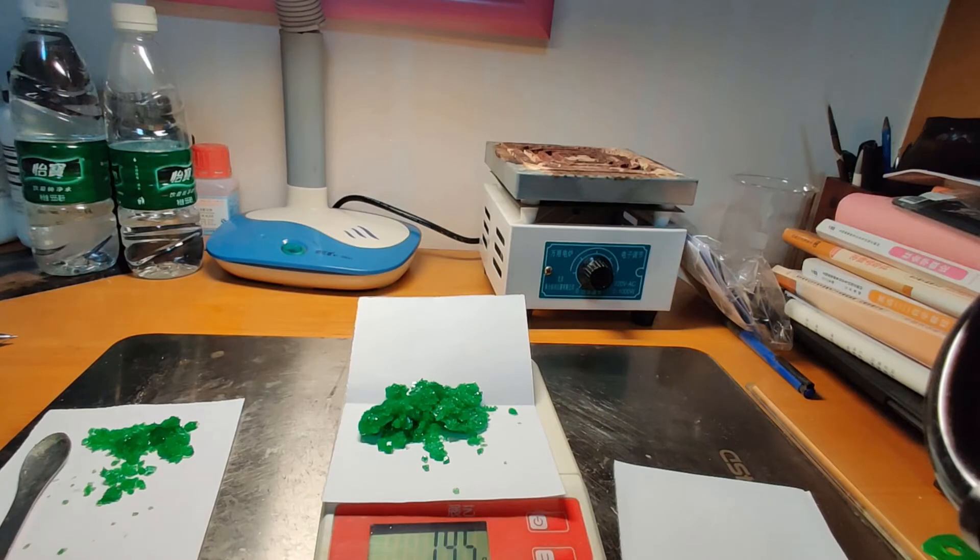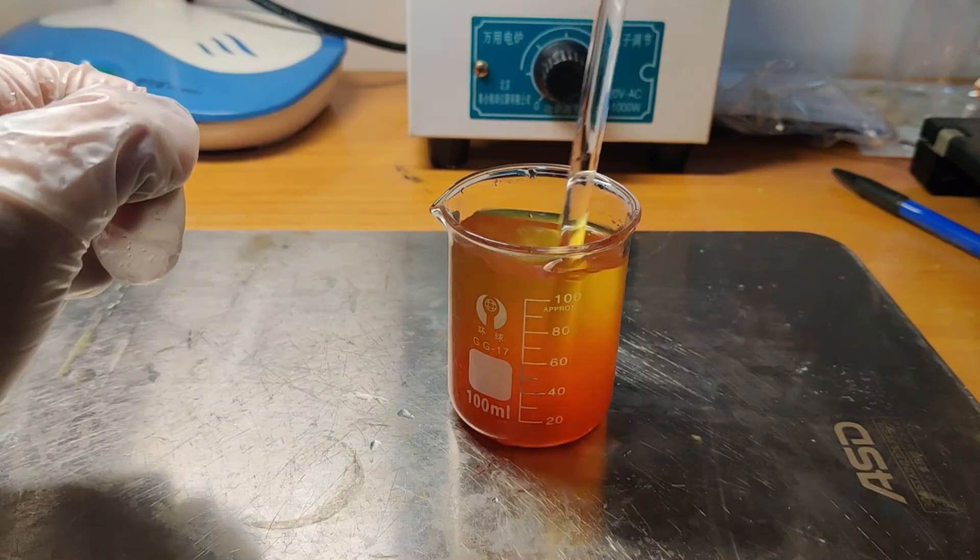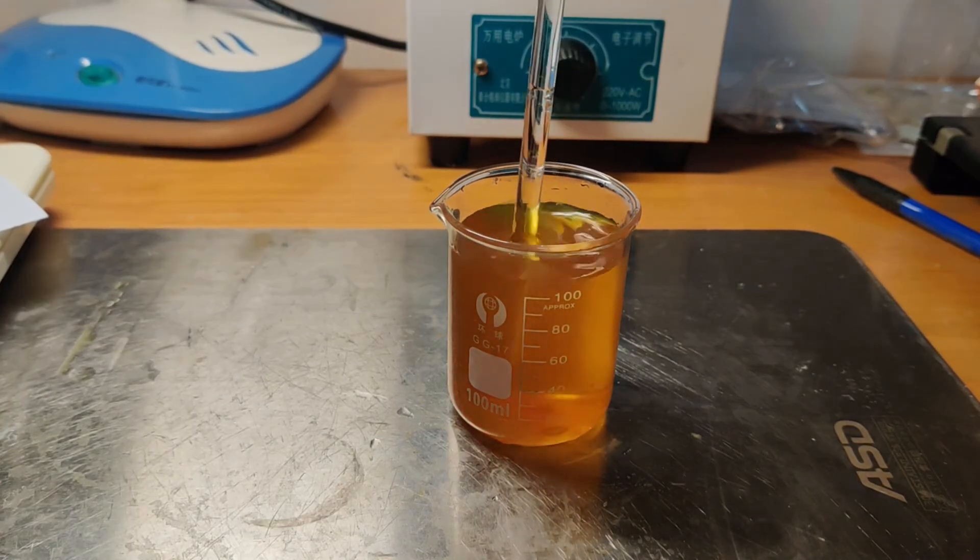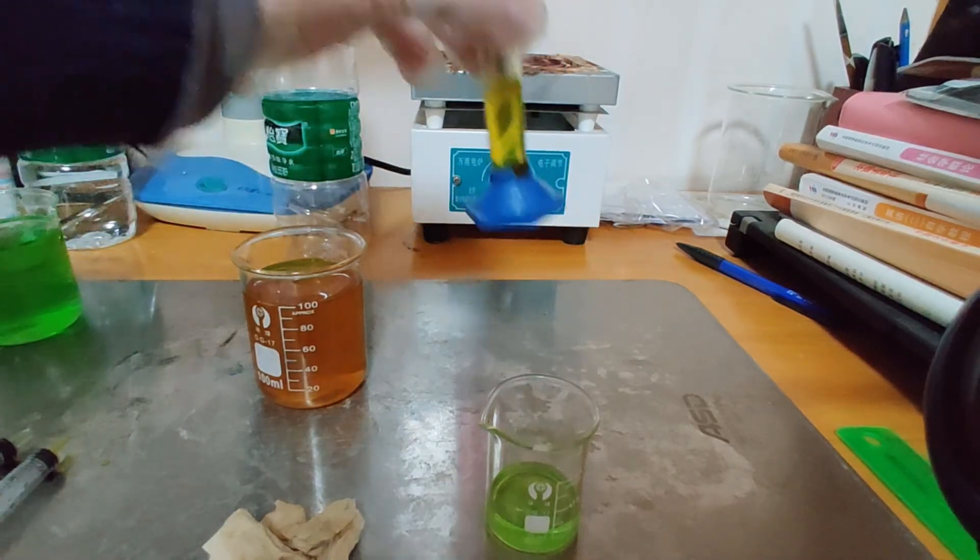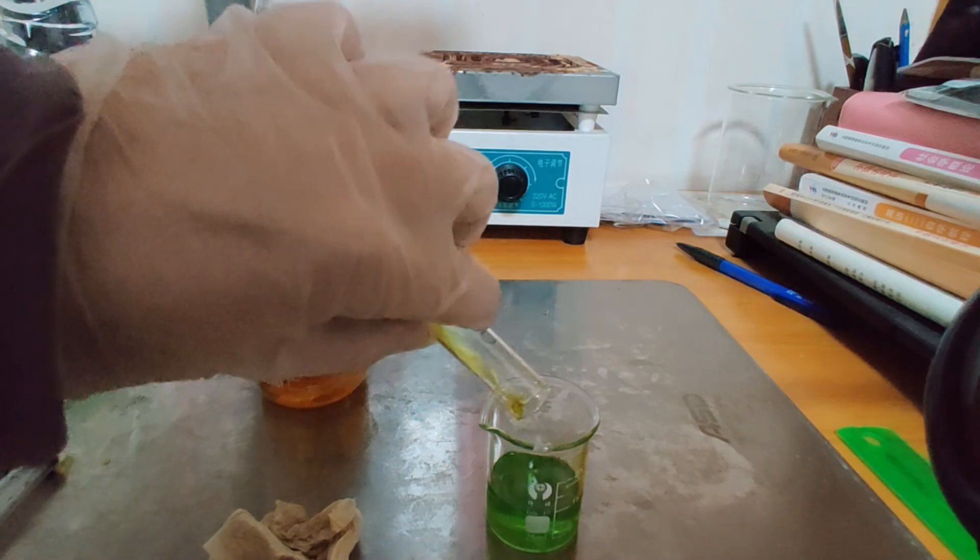Now let's go to the real cyanotype part. Firstly, I quickly made a 0.3 molar per liter potassium ferric oxalate and potassium ferricyanide solution respectively. Then I mixed equal amounts of both solutions as a cyanotype solution.